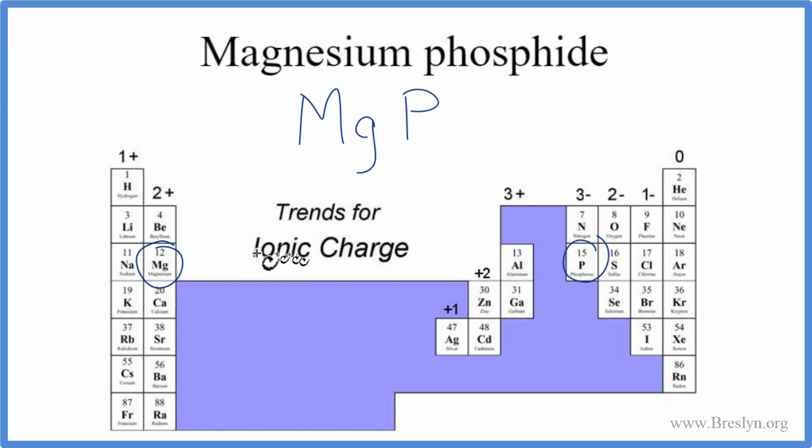So we can look at the periodic table. You see that it's organized by charge here, which is kind of nice. So magnesium group 2, everything in group 2 is 2 plus. That's its ionic charge. Phosphorus, 3 minus.